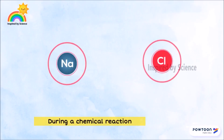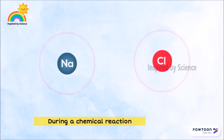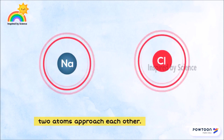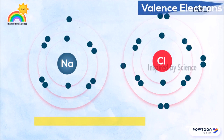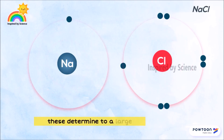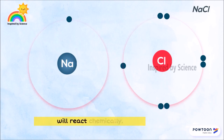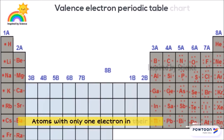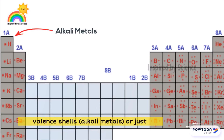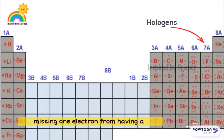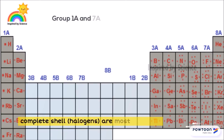During a chemical reaction, two atoms approach each other. The electrons in their outer shells are gained, lost, or shared to enable bonding. Known as the valence electrons, these determine to a large extent how that element will react chemically. Atoms with only one electron in their valence shells, or just missing one electron from having a complete shell, are the most reactive.